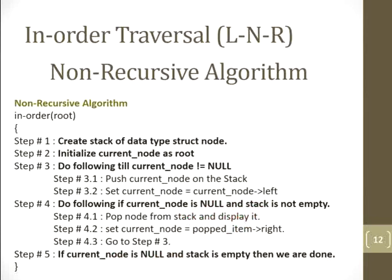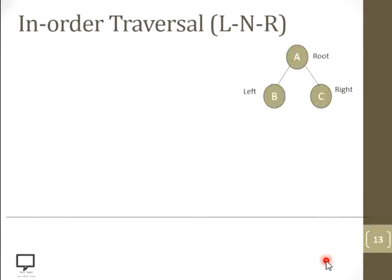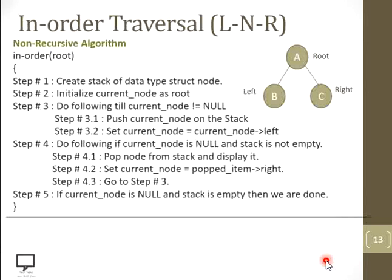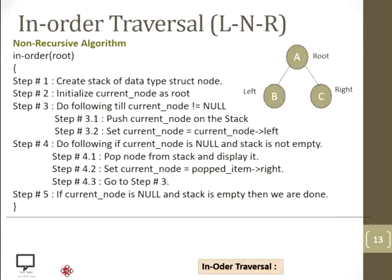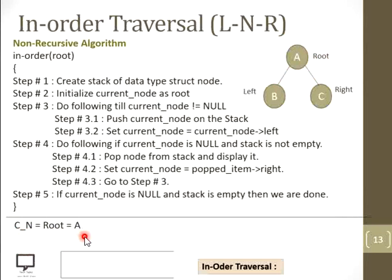I know it is difficult to understand theoretically, so now I am going to explain the same algorithm practically by dry running it with a simple example. The same algorithm is written here for reference. Very first step is to create the stack. After that, step two is to initialize the current node as the root node. My current node equals root equals A, because my root is node A.